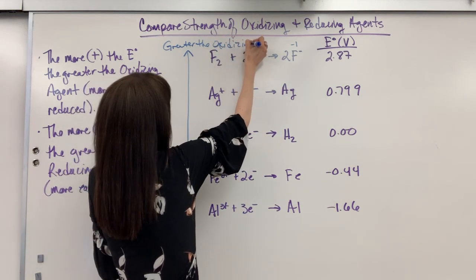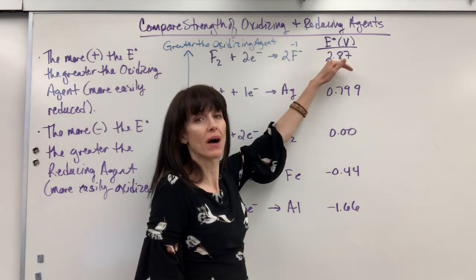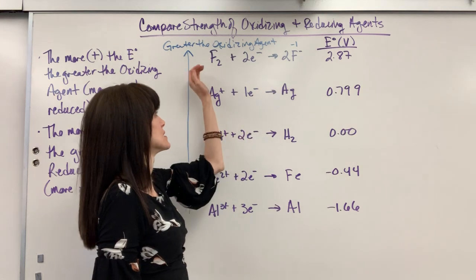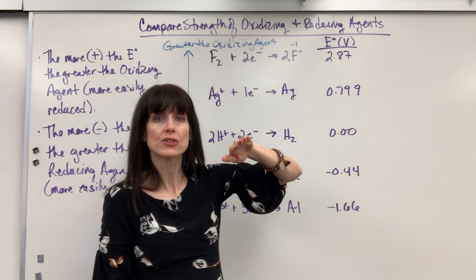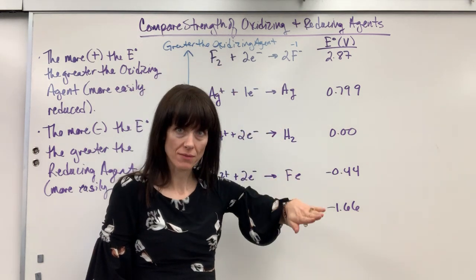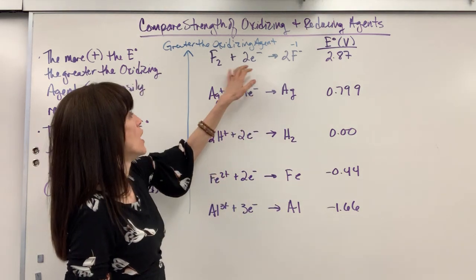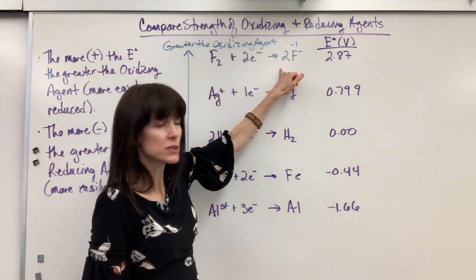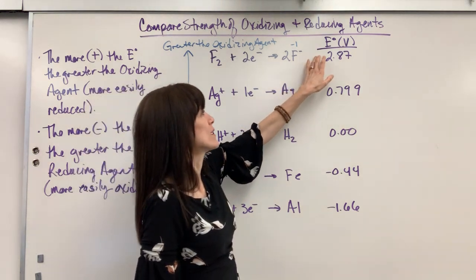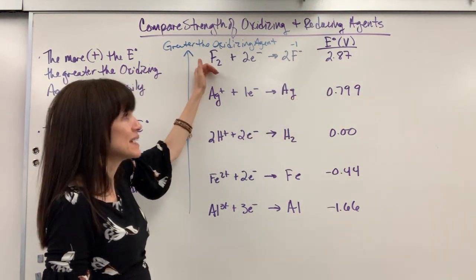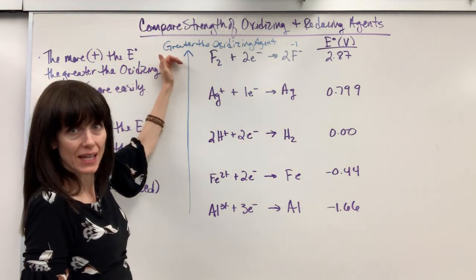And let me say why one more time. Because this is a positive value, it shows us that this is spontaneous, that voltage is positive. It will naturally push electrons. You don't have to put energy into it. The potential difference pushes those electrons. This is more easily reduced because it's positive. And the greater that number, the more easily it gains those electrons, which means it's a greater oxidizing agent.